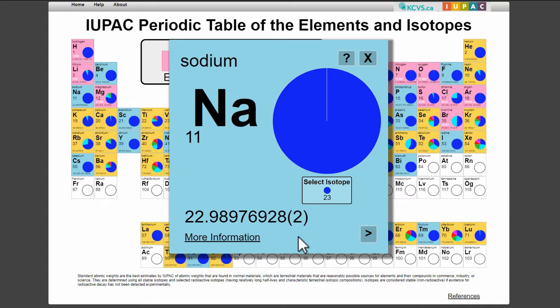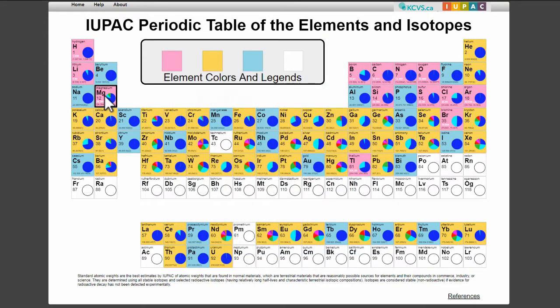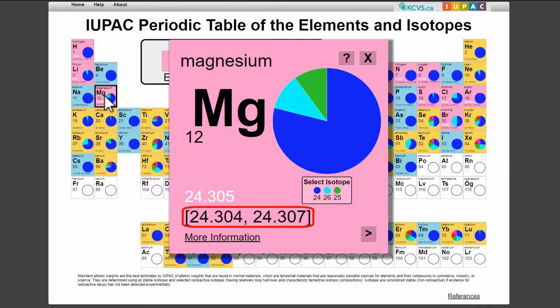Depending on the color of the element tile, this could be a single value with an uncertainty, like this one here, or an atomic weight interval with upper and lower bounds in square brackets, like magnesium. These intervals are because the ratio of the isotopes varies too much in nature to define a specific atomic weight.